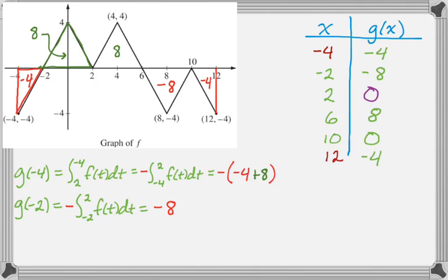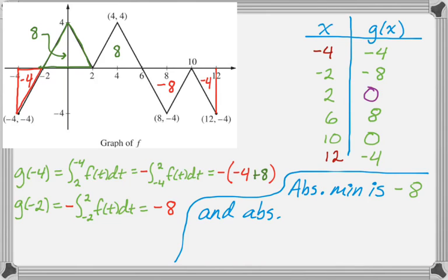So I have all of that, and now I can find my absolute maximum, which was the actual question. So, the absolute minimum is negative 8, and the absolute maximum is positive 8, by candidates test.